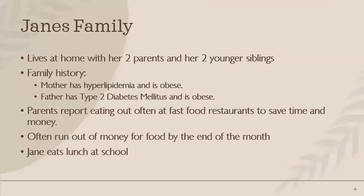Jane's family: she lives at home with her two parents and her two younger siblings. Her family history includes her mother having hyperlipidemia and obesity, and her father has type 2 diabetes and is also obese. Genetics is a risk factor for being overweight or obese, so since both of Jane's parents are obese, this increases the risk that Jane and her siblings will also be, due to being genetically predisposed to obesity.